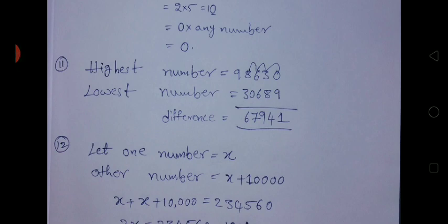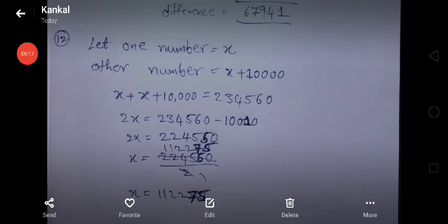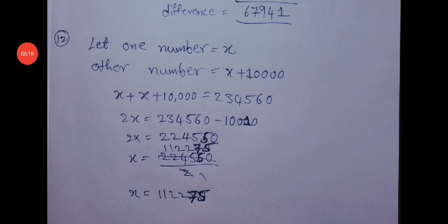Next: Find the difference between the highest and lowest 5-digit numbers using the digits 0, 3, 6, 8, and 9. The highest number formed is 98,630. The lowest number is 30,689. Subtracting: 98,630 minus 30,689 equals 67,941.